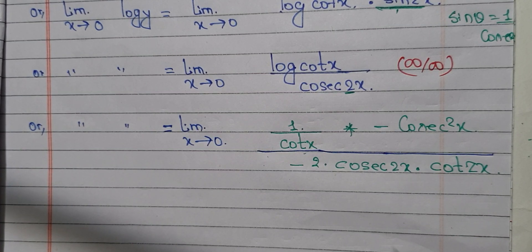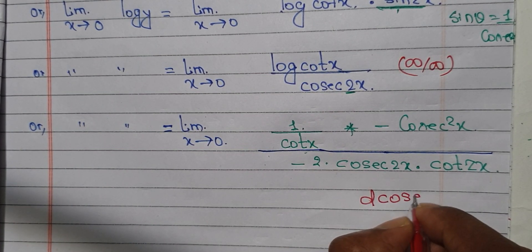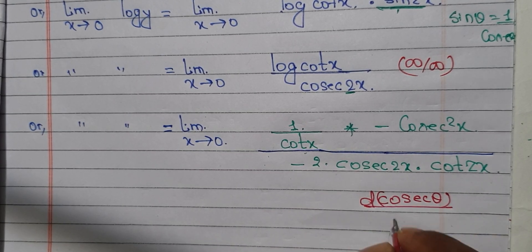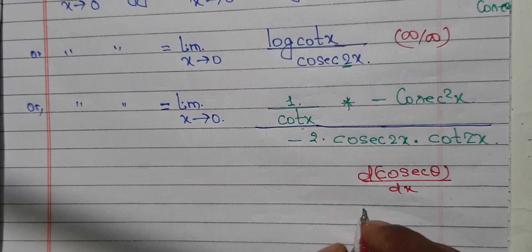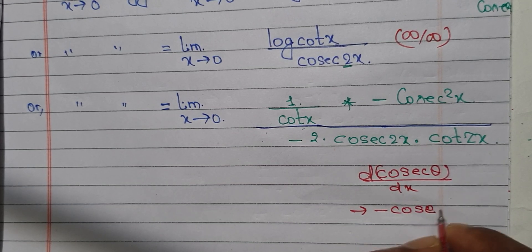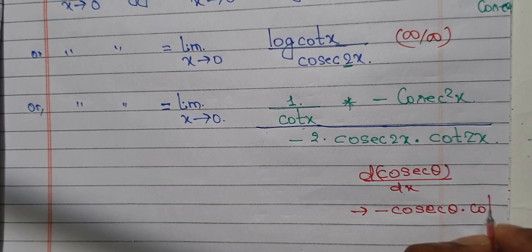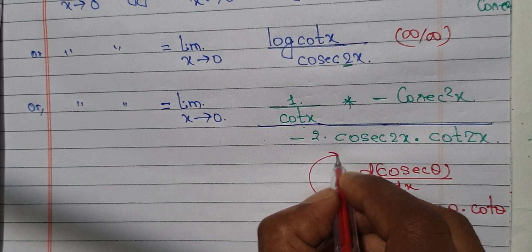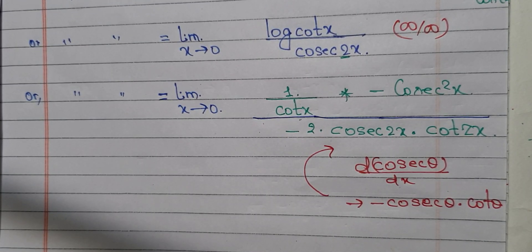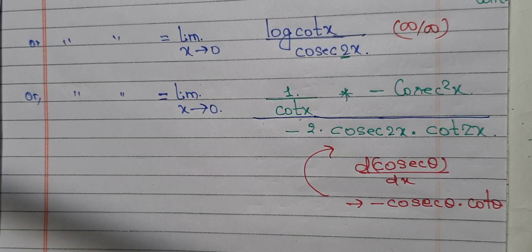I'm going to put it in the derivative of cos⁻¹ θ, putting it in as minus cos⁻¹ θ into cos θ. I will apply the formula in mathematics — the derivative of cos θ and cos θ.